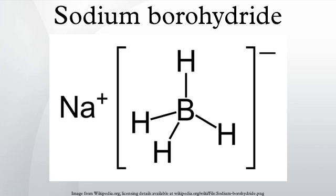Variations in the counterion also affect the reactivity of the borohydride. The reactivity of NaBH4 can be enhanced or augmented by a variety of compounds. Oxidation with iodine in tetrahydrofuran gives the BH3·THF complex, which can reduce carboxylic acids. Likewise, the NaBH4–MeOH system, formed by the addition of methanol to sodium borohydride in refluxing THF, reduces esters to the corresponding alcohols. Mixing water or an alcohol with the borohydride converts some of it into unstable hydride esters, which are more efficient at reduction.